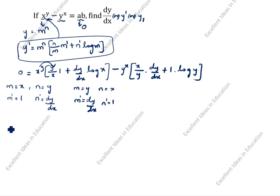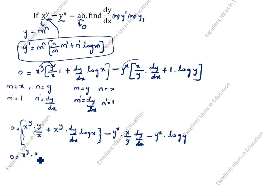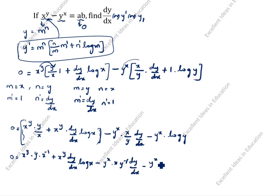After that we will multiply inside. 0 is equal to x power y times y by x plus x power y times dy by dx times log x, minus y power x times x by y times dy by dx, minus y power x times log y.